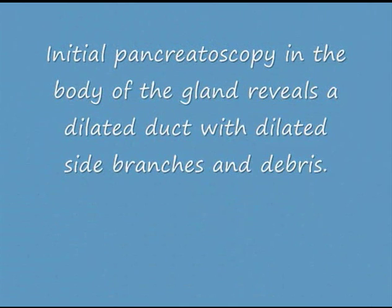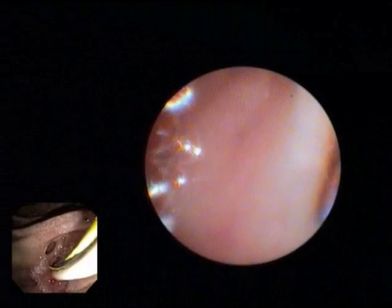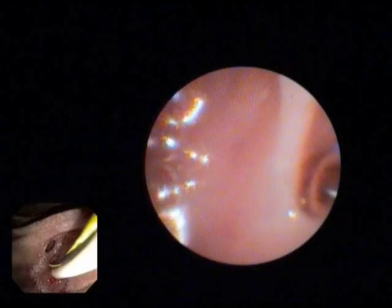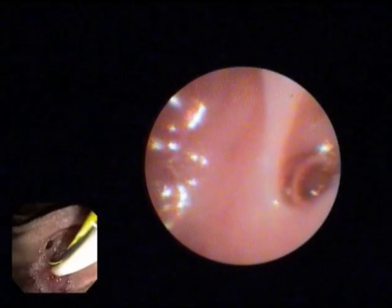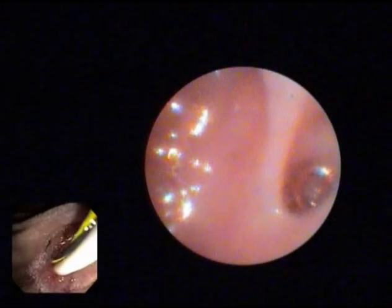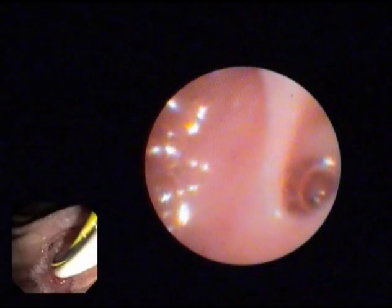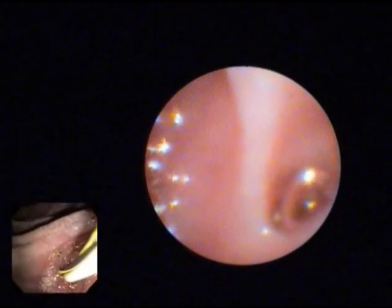Initial pancreatoscopy in the body of the gland reveals a dilated duct with dilated side branches and debris. Here you see a very generously dilated pancreatic duct lumen with a grossly dilated side branch containing an air bubble.